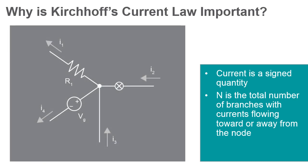The term node in an electrical circuit generally refers to a connection or junction of two or more current carrying paths or elements, such as cables and components. Also, for current to flow either in or out of a node, a closed circuit path must exist. We can use Kirchhoff's current law when analyzing parallel circuits.